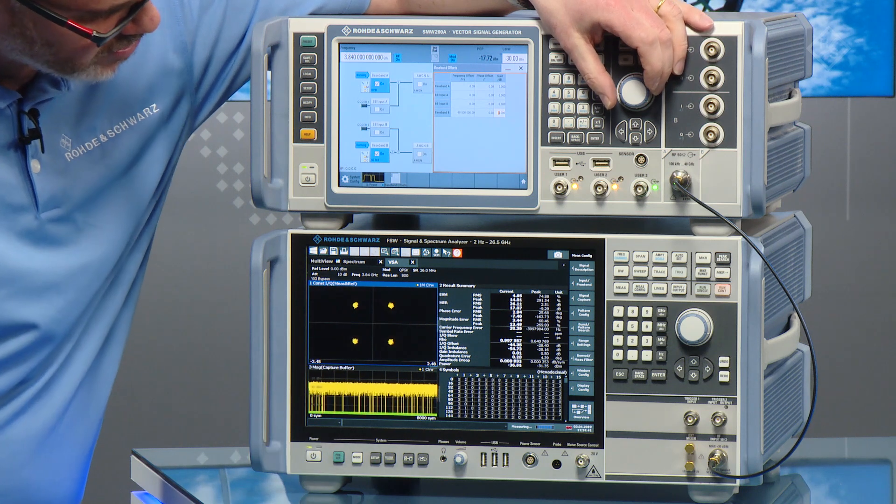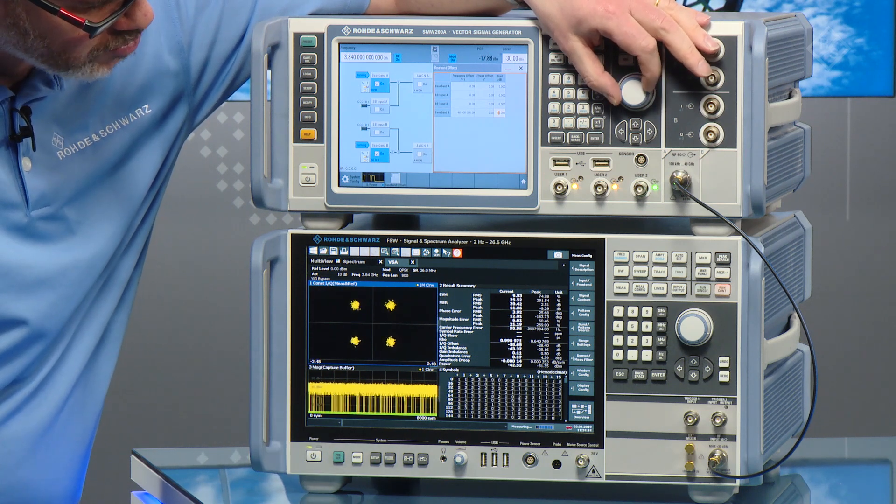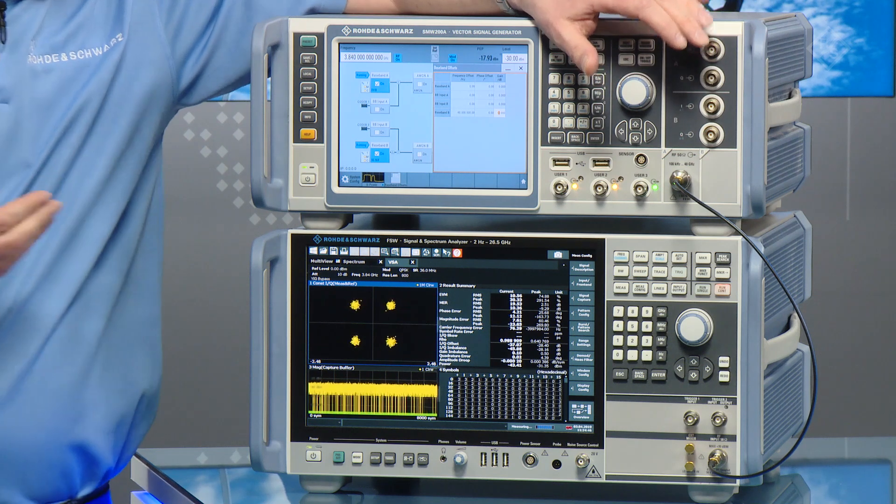And you can see the dots getting bigger here, the clusters getting bigger, as that interference signal starts to really impact the performance of the receiver.